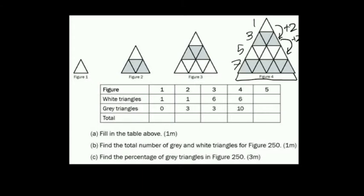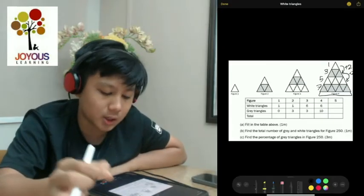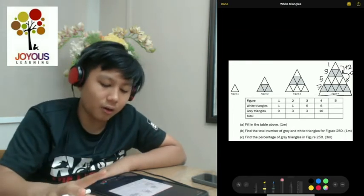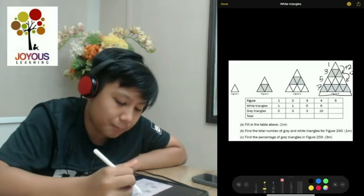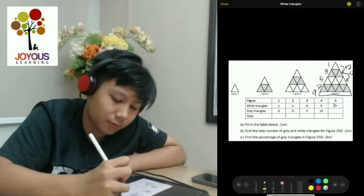Which means that figure five has five layers and in every figure only one color changes. For example, the number of white in figure three and four is the same as only the gray triangles change in number. So in the fifth layer of figure five, there will be five plus four which is nine. So there are nine white triangles on the fifth layer in figure five. The total of white triangles in figure five is nine plus five plus one which is 15.